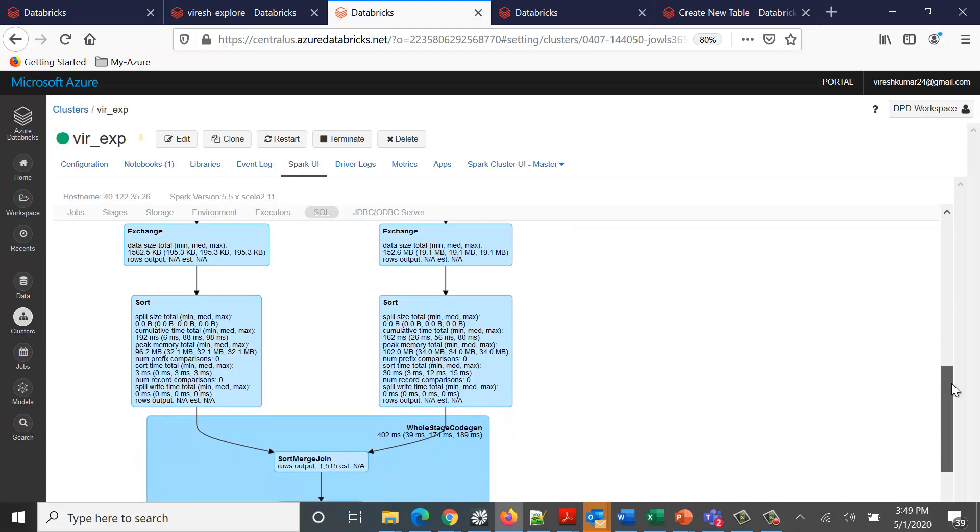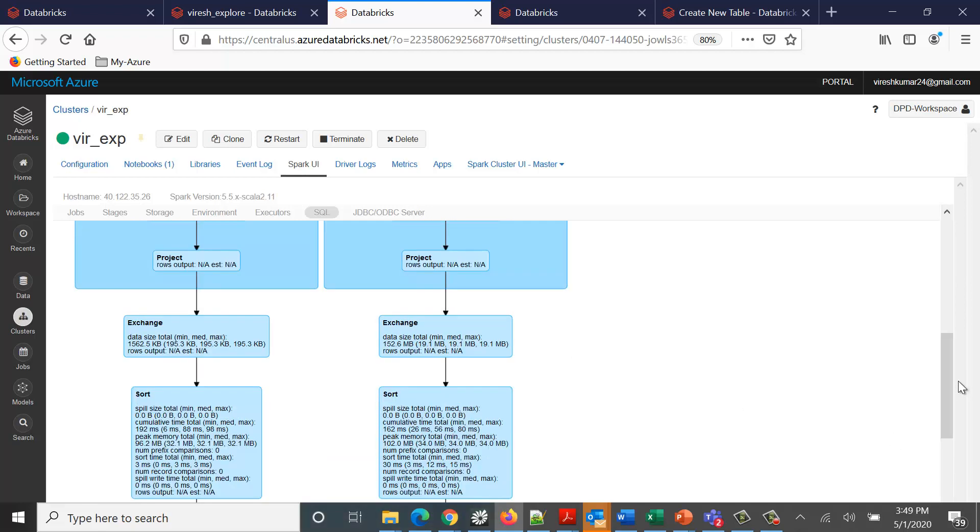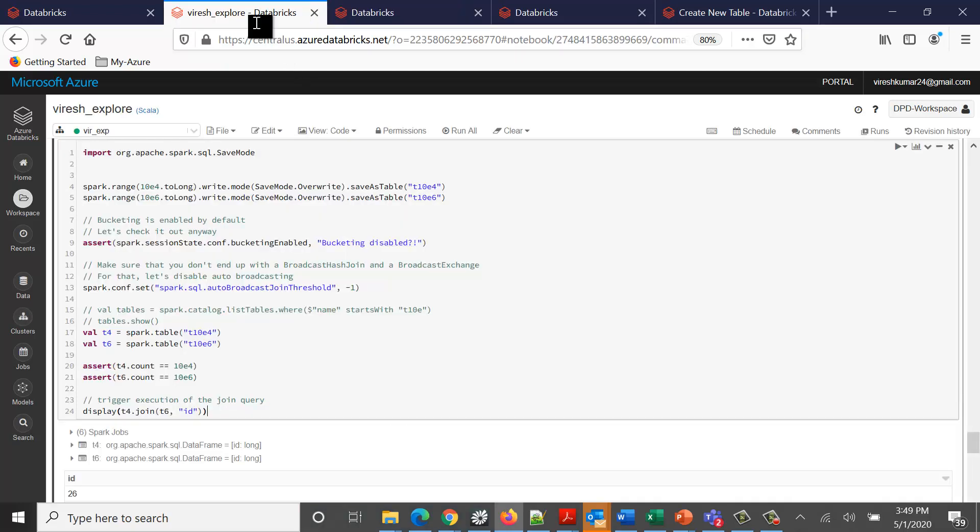Data would be shuffled to perform the sort merge join. Then further the sorting is also performed once the data is already shuffled. Eventually you see here the sort merge join is called and it has taken some good amount of time. But the important point we're trying to highlight is that this stage of exchange has come in between. The shuffling is not avoided here.